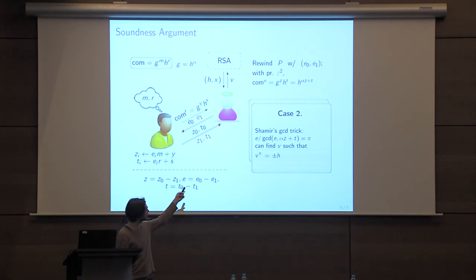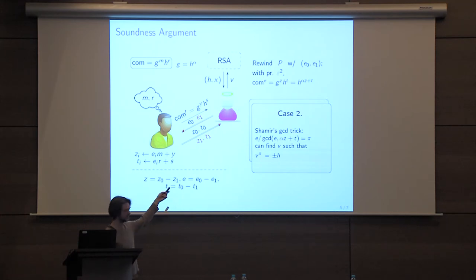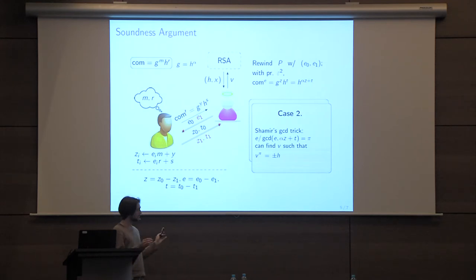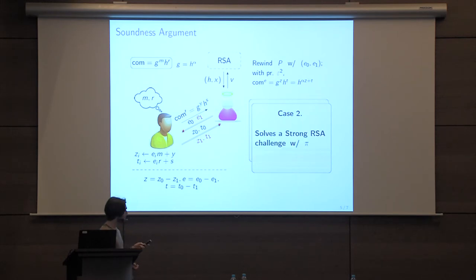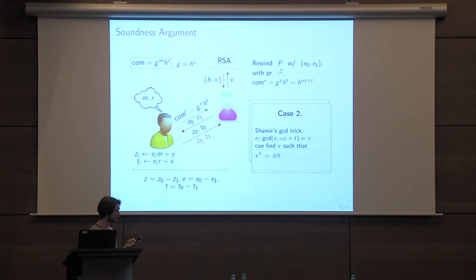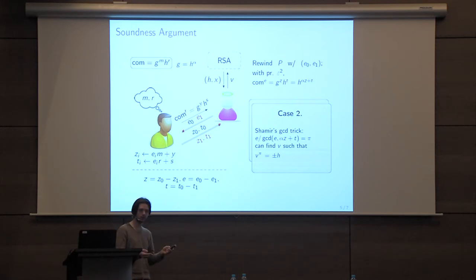Why do we want that? Because in this case we can apply a trick known as Shamir's GCD and the exponent trick to find some π and some v such that v^π = H, where H is essentially our challenge up to some sign. Importantly, π divides E — π is a value that divides E, the difference of the two challenges sent by the simulator. So we can solve a strong RSA challenge with exponent π. But this exponent π depends on Z and T, i.e., on the answer of the prover. Intuitively it's not obvious we could force the malicious prover to solve an RSA challenge for a fixed exponent of our choice — he has some freedom in choosing the exponent.